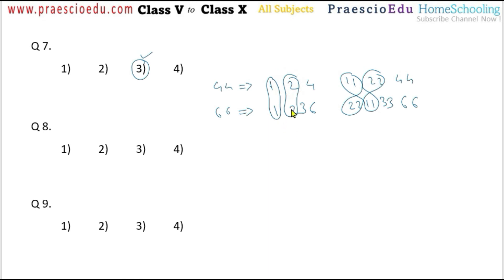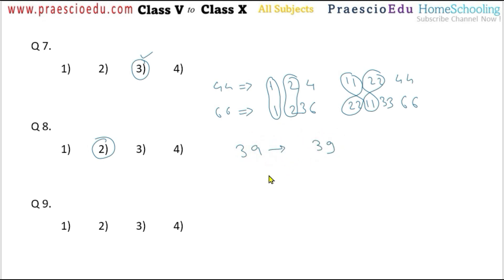The common factors 1, 2, 11, and 22 — that is 4 common factors — are given in option number 2. Question number 9: find the sum of all the divisors of the sum of the highest divisor of 39 and the lowest divisor of 27. The highest divisor of 39 is 39 itself, and the lowest divisor of 27 is 1. So 39 plus 1 equals 40.